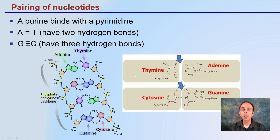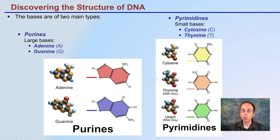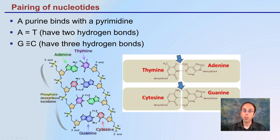Keep in mind, this is about DNA. So if you look back, adenine binding with thymine — well, adenine would bind with uracil if we were talking about double-stranded RNA, which does occur.